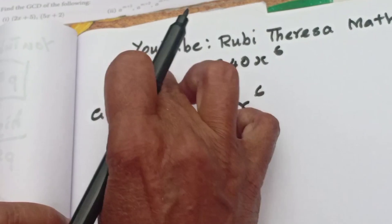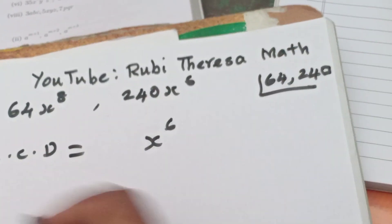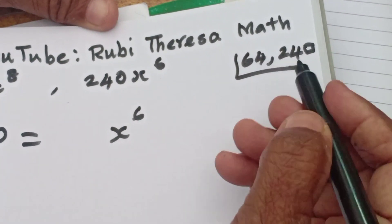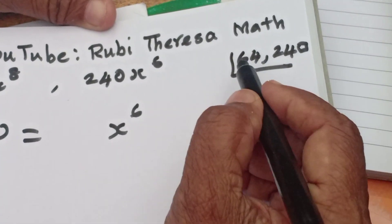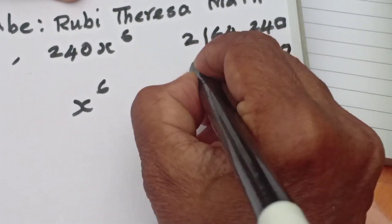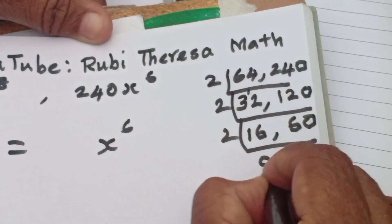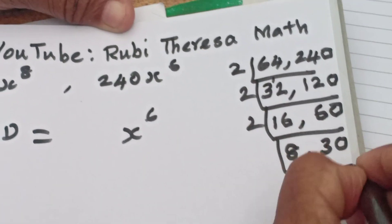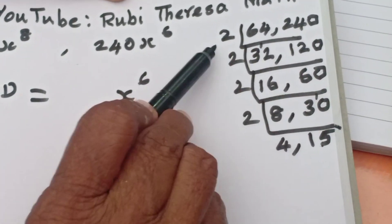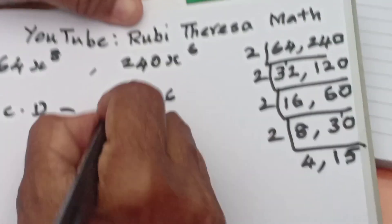For the coefficients 64 and 240, find the GCD using the 2 times table or 8 times table. 8 times 8 is 64, and 8 times 30 is 240. Using the 2 table as common factor: 2, 2, 2, 2 — so GCD of 64 and 240 is 16. Alternatively using the 8 table: 8 divides 64 and 8 divides 240 (8 times 30), with common factor 2 giving 16.